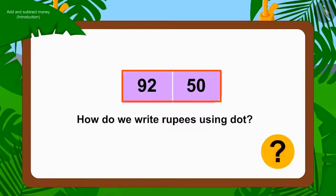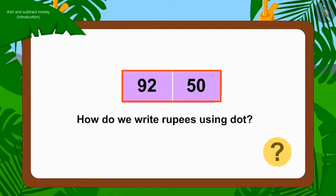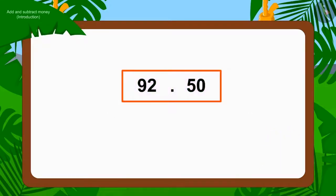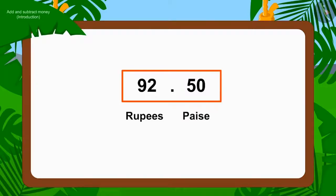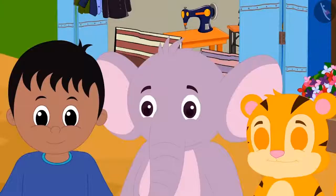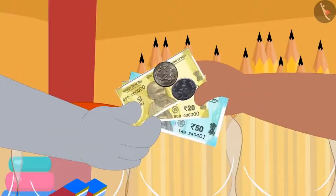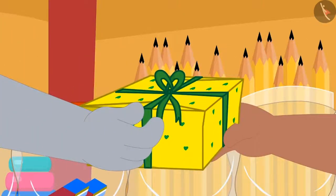How do we write this using dots as rupees? To the left of the point, we will write the number of rupees, and to the right, we place paise. The three together paid the price of hat and pencil and bought the gift.